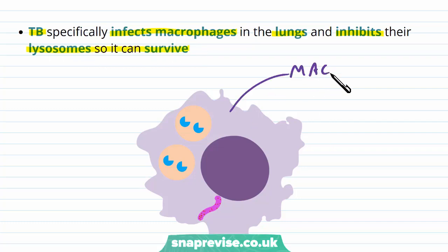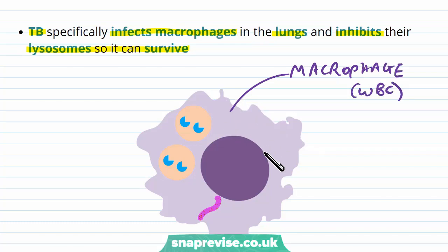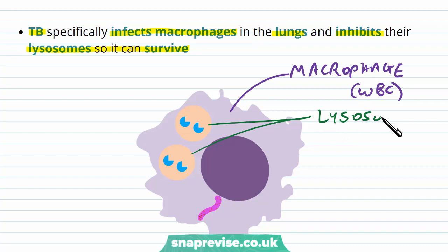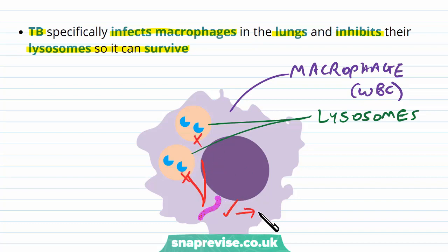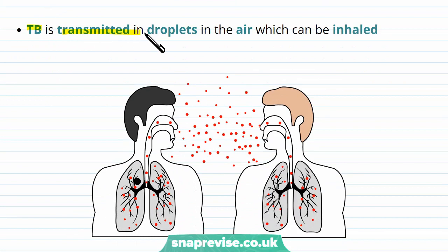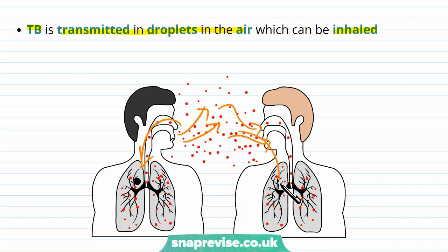The macrophage is a type of white blood cell involved in engulfing particular pathogens such as bacteria. It usually uses lysosomes — an organelle found in most eukaryotic cells — to release digestive enzymes onto the bacterium to break it down. But in this case, the TB bacterium is able to inhibit the lysosomes, and therefore it can survive inside the macrophage. TB gets transmitted in droplets in the air which can be inhaled — if people are breathing or coughing, microscopic droplets can contain these bacteria and other people can breathe them in, making it very easily transmitted into airways.